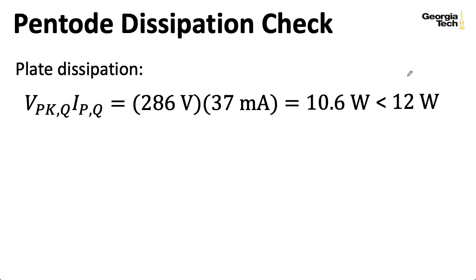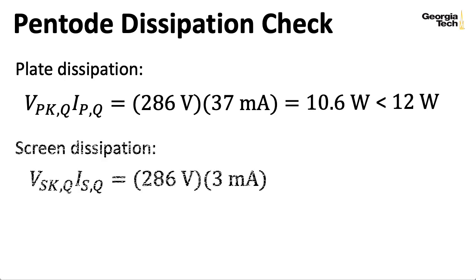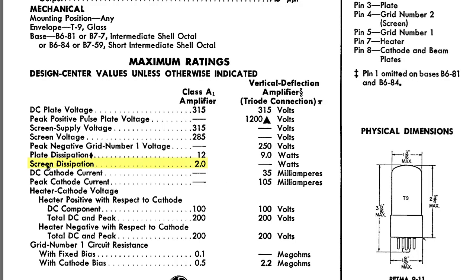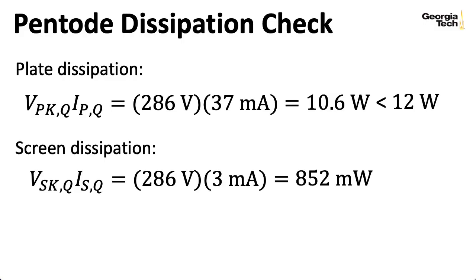Now, although we never saw preamplifier stages where the designers exceeded the plate dissipation of something like a 12AX7, I have seen some power amplifier designs where the designer exceeds this limit. How interesting is that? Okay, so what about the screen dissipation? Well, the screen to cathode voltage in this instance is the same as the plate to cathode voltage. And multiplying it by the screen current, we wind up with 852 milliwatts. And checking out the data sheet, we see a maximum screen dissipation of 2 watts. So we are well within the limit as far as the screen goes. Now, although sometimes on power tubes, pentodes or beam tetrodes, designers will push the plate dissipation limit, they'll never push the limit on screen dissipation. The screen is relatively fragile.